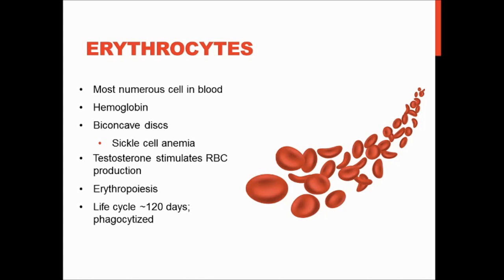The process of forming new red blood cells is called erythropoiesis, and these red blood cells are made by the bone marrow. The life cycle of red blood cells is about 120 days, which is pretty short — less than a year. After they've gone through their life cycle and are no longer functioning, they are phagocytized or engulfed by macrophages, usually in the spleen, which is known as the graveyard of red blood cells.